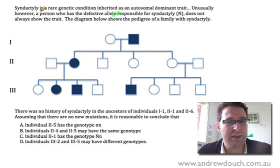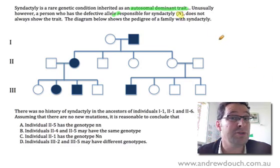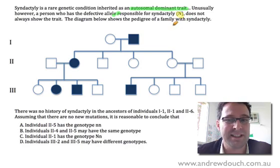So notice up here it tells you that syndactyly is a rare genetic condition inherited as an autosomal dominant trait. So they're telling you that it's autosomal dominant. You don't have to work out that it's autosomal dominant, but they say unusually. However, a person who has the defective allele responsible for syndactyly, and notice here that they're giving you an allele symbol. So we're going to use their allele symbols, we're not going to make up our own, and we're not going to use S for syndactyly, we're going to use N because that's what they've given us.